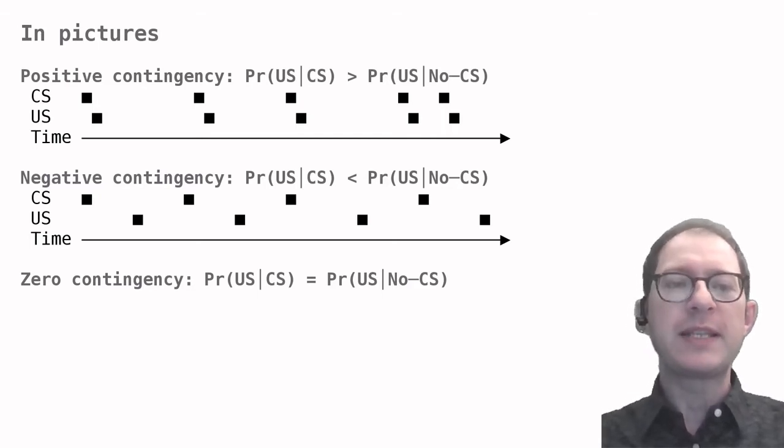For example, if the US is a shock, the CS would actually be a safety signal when the CS-US contingency is negative, not a danger signal. If the animal learns this, we should see the CS induce signs of relaxation, for example, like a decreased heart rate.